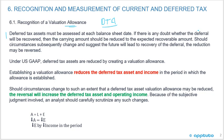Under U.S. GAAP, deferred tax assets are reduced by creating a valuation allowance. Establishing a valuation allowance reduces the deferred tax asset and income in the period in which the allowance is established. Should circumstances change to such an extent that a deferred tax asset valuation allowance may be reduced, the reversal will increase the deferred tax asset and operating income.